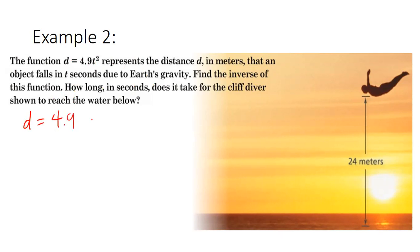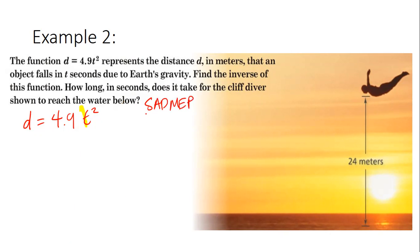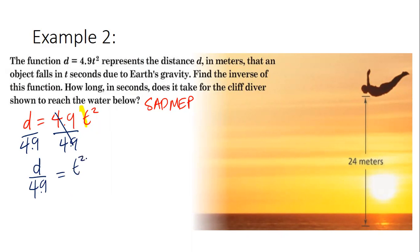We have d = 4.9t². Because this is a real world problem, we don't have to switch variables since we have two different variables — our goal is to get t by itself. Looking at SADNIP: is there anything to add or subtract away from t? No. Is there anything to divide or multiply away? Yes, there is this 4.9, because it's 4.9 times t squared. So the opposite is to divide. I'm going to divide by 4.9 — what I do to one side, I do to the other — and I'm left with d divided by 4.9 equals t squared.